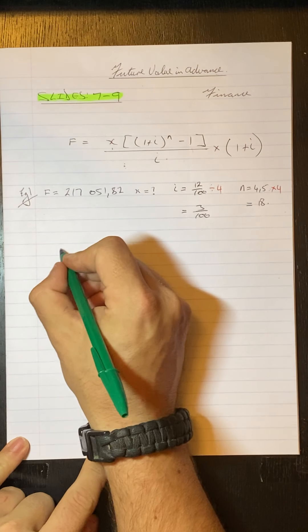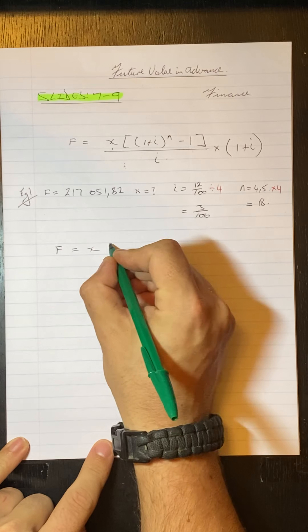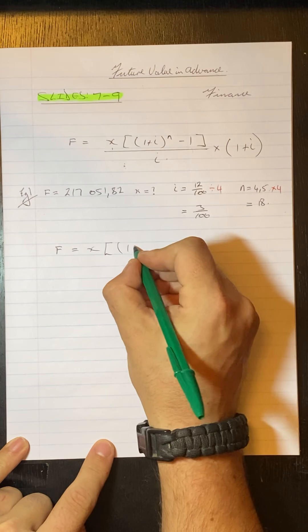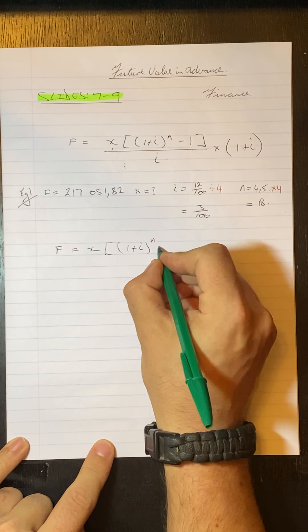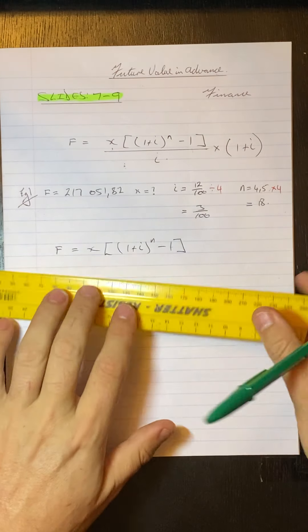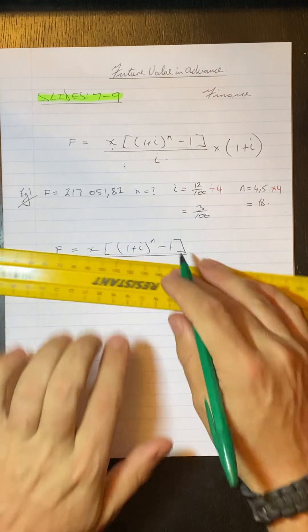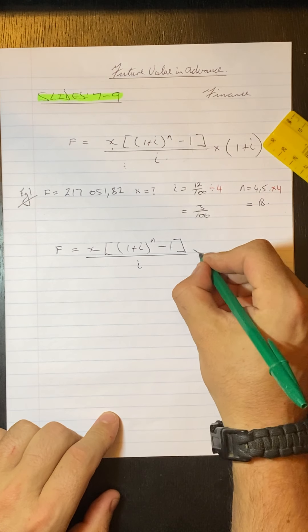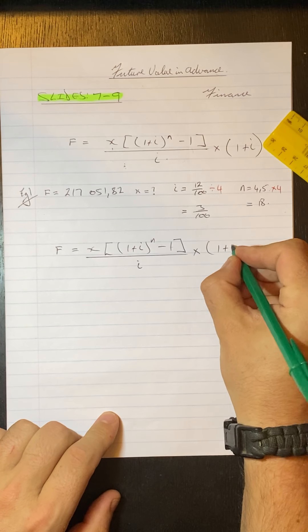So our formula is: F equals X times [(1 plus i) to the power of n minus 1], all over i, times (1 plus i).